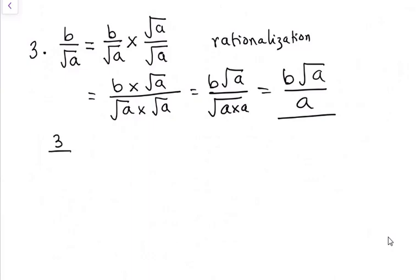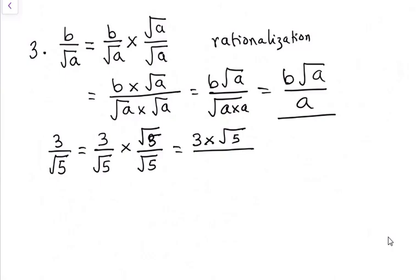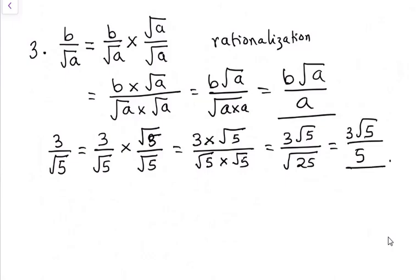We can look at two examples to drive home the point. Say for example, we have 3 over square root of 5. In the process of rationalization, we multiply the numerator and denominator by square root of 5. And this will give us 3 times root of 5 over root of 5 times root of 5. And this will give us 3 root of 5 over square root of 25. So we have 3 root of 5 over 5. That is the first example.